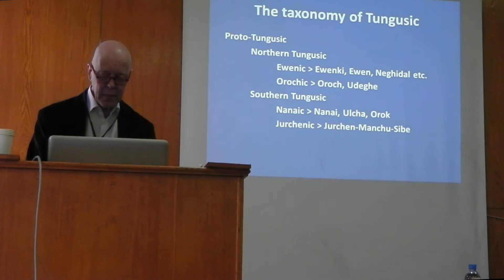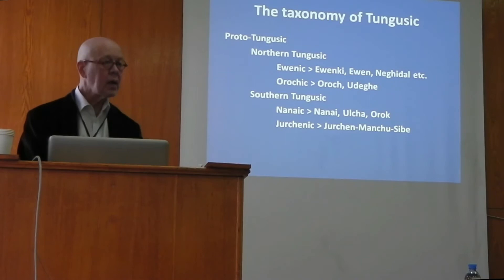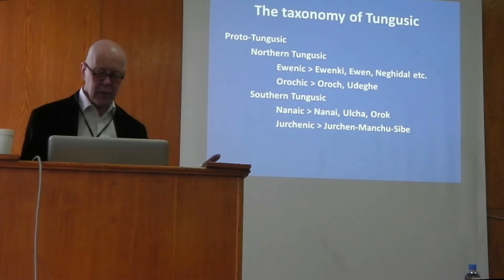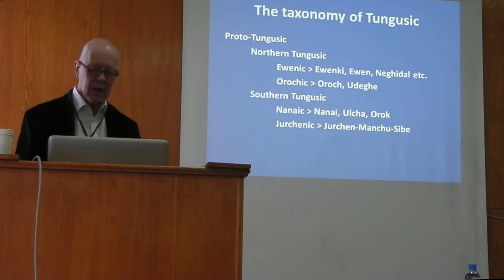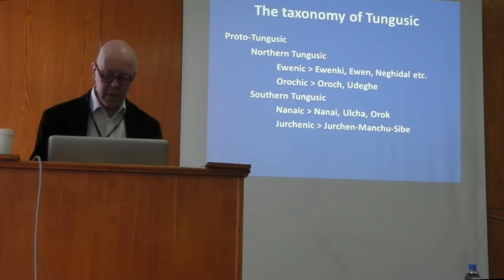Now we may look at the taxonomy of Tungusic. As a family, Tungusic is divided into two groups: northern and southern. From the northern group we get Evenki, which is the most expansive group, and the Oroch-Ulege branch, now located to the east of the Amur, which must have been connected with Evenki because they share a number of primary innovations.